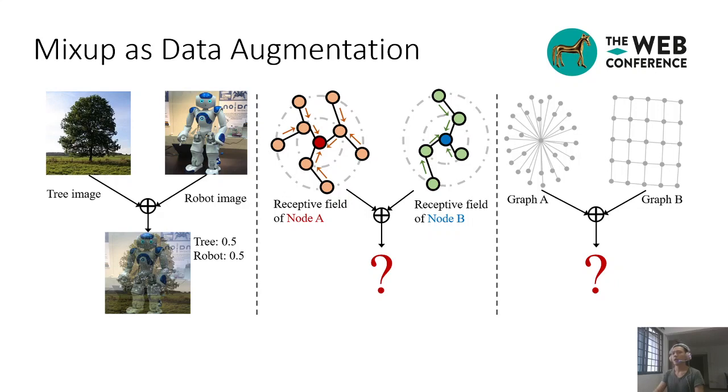However, unlike image pixels, nodes are not placed on a regular grid, but are instead unordered, which makes it difficult to pair the nodes in different subgraphs for mixup. Besides, the interpolation is not well-defined for graph topology, which is necessary for mixup. Furthermore, due to the connectivity between nodes, the use of mixup on different node pairs can interfere with one another, which can cause conflicts and perturb the mixed features.